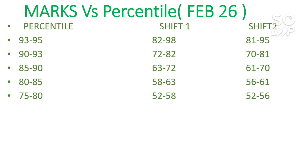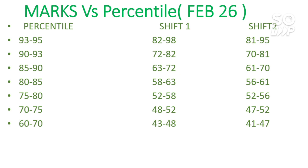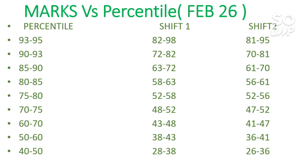For February 26th lower percentiles: 75 to 80 percentile needs around 52–58 marks, two marks less for Shift 2. For 70 to 75 it's 48–52 for Shift 1, 47–52 for Shift 2. For 60 to 70 it's 43–48, Shift 2 is 41–47. For 50 to 60 percentile you need 38–43, two marks less for Shift 2. For 40 to 50 percentile the minimum needed is 28–38 for Shift 1 and 26–36 for Shift 2.